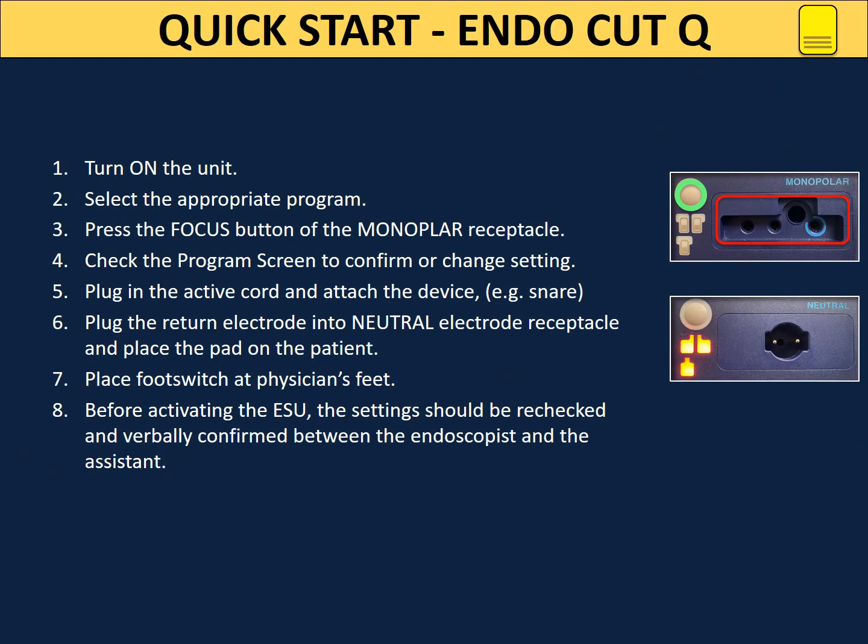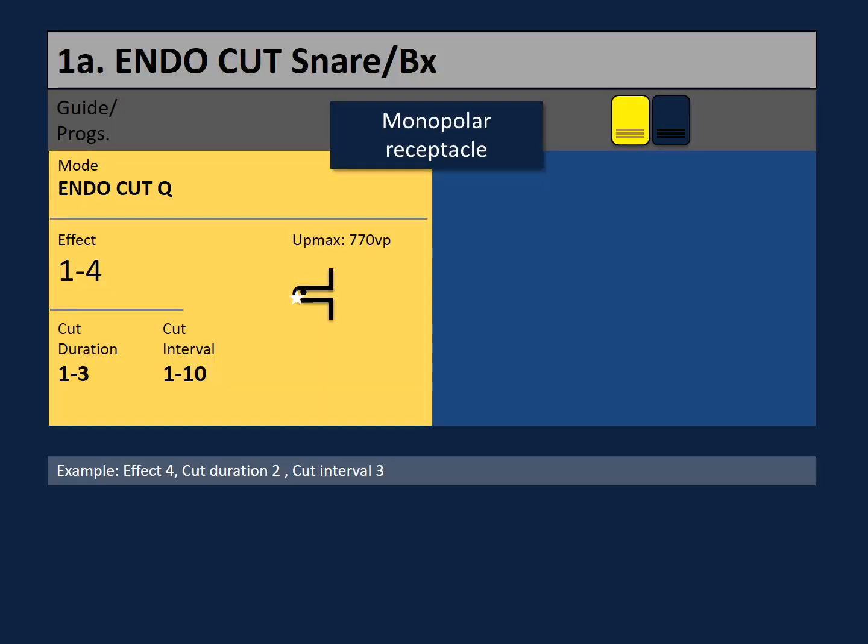For a quick start using the EndoCut Q: always position the machine where you can see it. Turn on the unit. Select the appropriate program. Press the focus button of the monopolar receptacle. Check the program screen to confirm or change settings. Plug in the active cord and attach the device. Place the pad on the patient and plug the return electrode into the neutral electrode receptacle. Position the footswitch well. Before activating the ESU, the settings should be rechecked and verbally confirmed between the endoscopist and the assistant. It is recommended to always start by using the lowest possible setting that will achieve the desired surgical effect.